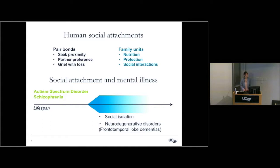We know that neurodegenerative disorders are often characterized by social deficits. FTD — frontotemporal lobe dementia — is a disorder where the hallmark deficit is social behavior deficits that occur as some of the earliest symptoms that we see. These are highly heritable diseases where risk genes have been associated with them.